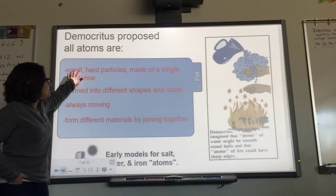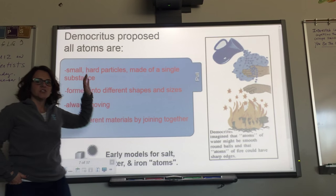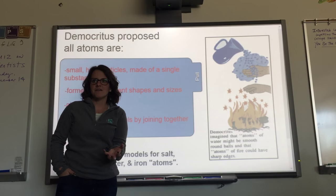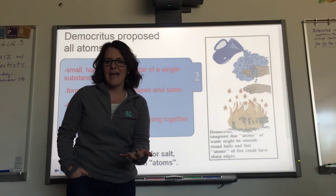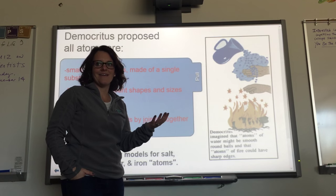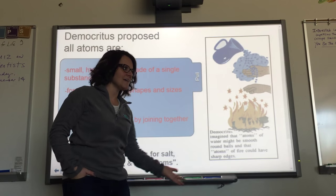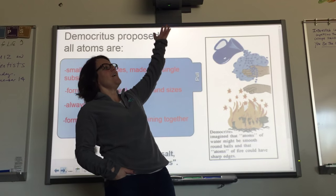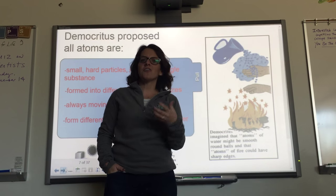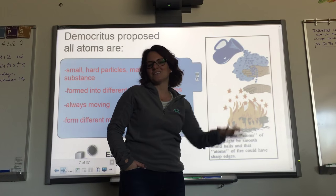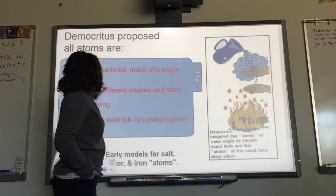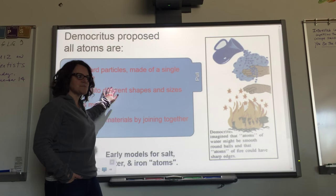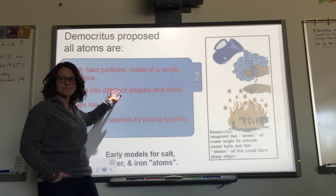He said water is made up of all water atoms — fairly small. Trees are made up of tree atoms — probably pretty big. Clouds are made of cloud atoms. He said they make different shapes and sizes. Why? Because a tree is much bigger than a little fire — tree atoms make trees, which is different from cloud atoms that make clouds.